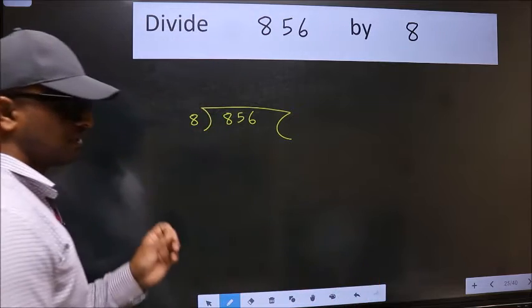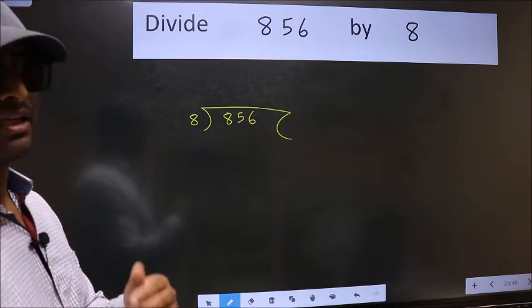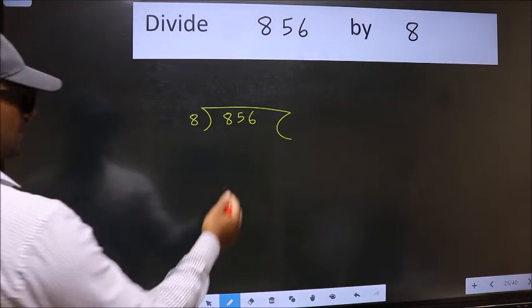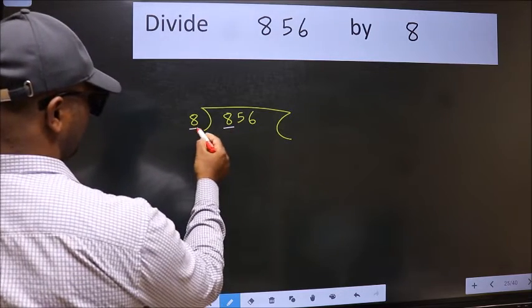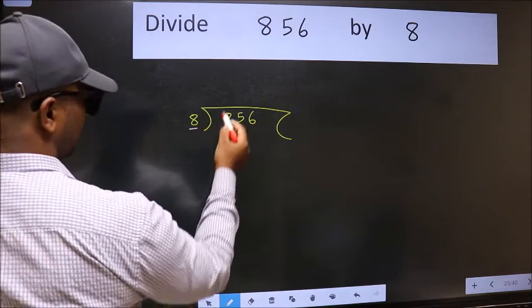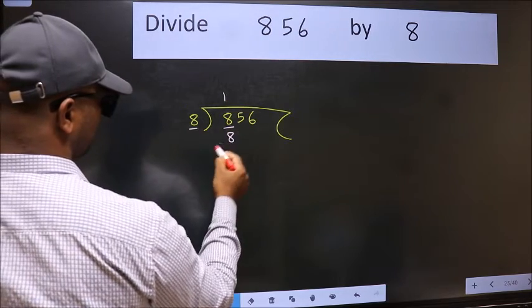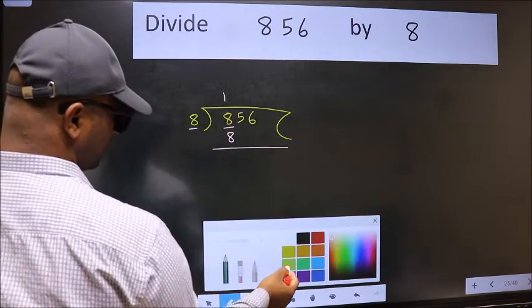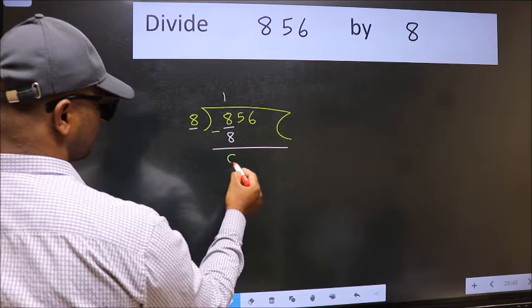This is your step 1. Next, here we have 8 and here 8. When do we get 8 in 8 table? 8 ones 8. Now we should subtract. We get 0.